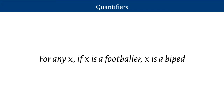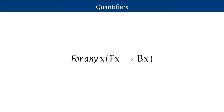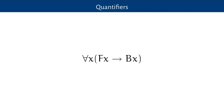We'll represent 'if x is a footballer, x is a biped' with an arrow. We'll use this arrow to represent 'if'. 'Is a footballer' we'll just write with an F, and 'is a biped' with a B — capital letters for predicates, written in front of the things they apply to, in this case the variable x. So we're saying: for any x, if it's a footballer, then it's a biped. And 'for any x' will be represented by an upside-down A — that's the universal quantifier. That's how we represent the structure 'all footballers are bipeds'.